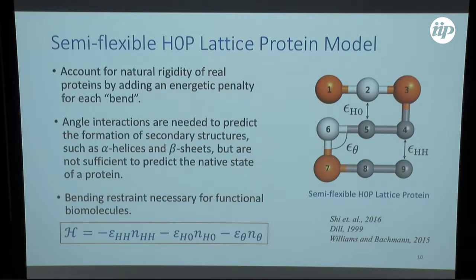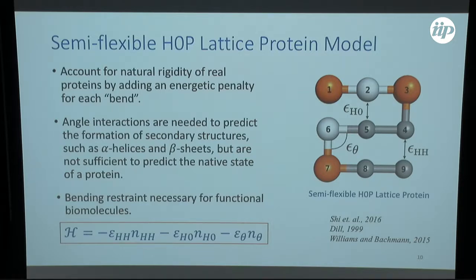The next step, instead of defining different interactions between all monomer types, was to introduce a bending restraint. A bending restraint is necessary to form stable helical structures in a biological environment. So in addition to HH and HO contacts, for each 90-degree bend in the protein we introduce an energetic penalty — something that raises the energy of the system. The Hamiltonian now includes HH contributions, HO contributions, and the angle contribution. It's just another layer.